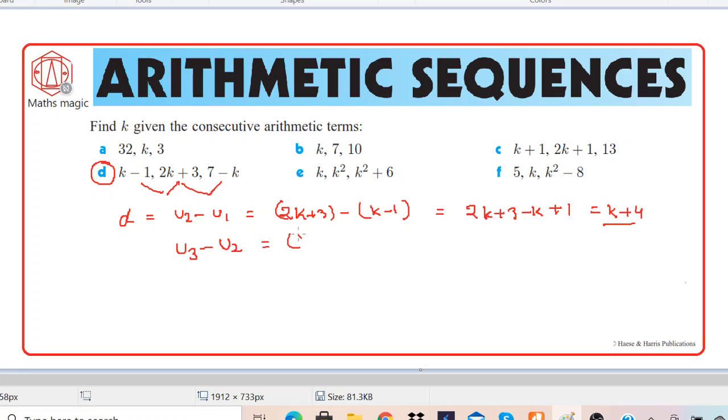So u3 is 7 minus k and u2 is 2k plus 3. So simplify similarly. It's 7 minus k minus 2k minus 3, which equals negative 3k plus 4.